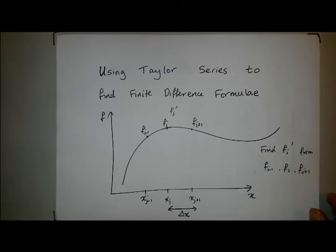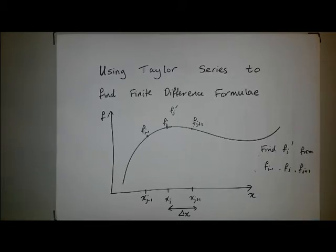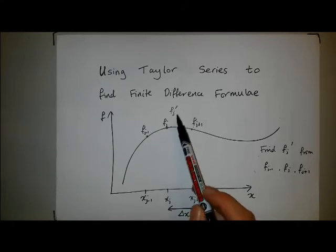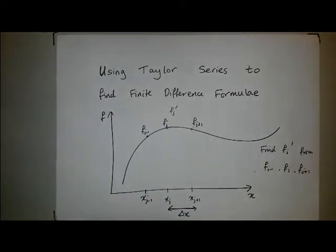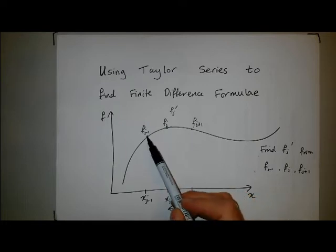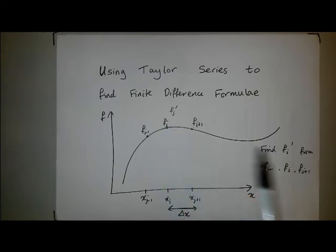So I need to write down some Taylor series approximations. First of all, I have to think which ones to write down. I know that and I want to find that. I don't want to introduce too many unknowns, so I'm going to write down Taylor series approximations for f_{j+1} and f_{j-1} centered around f_j.